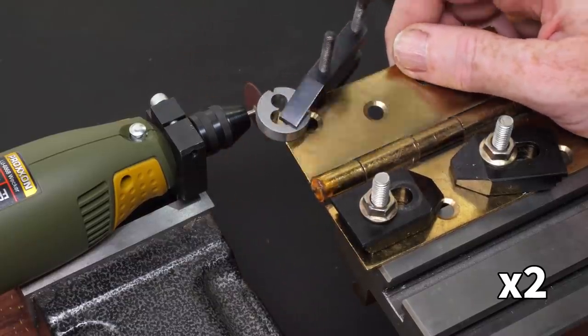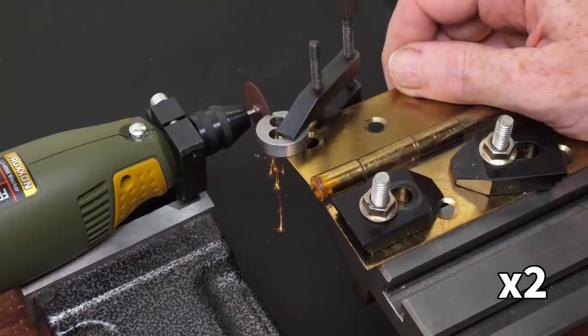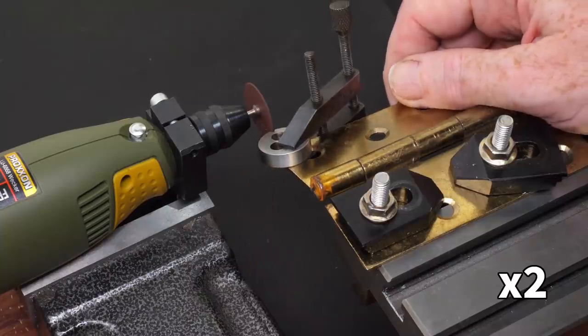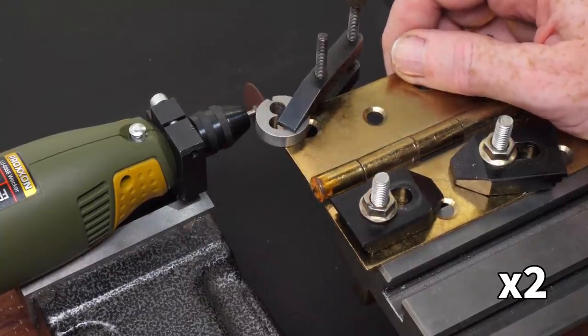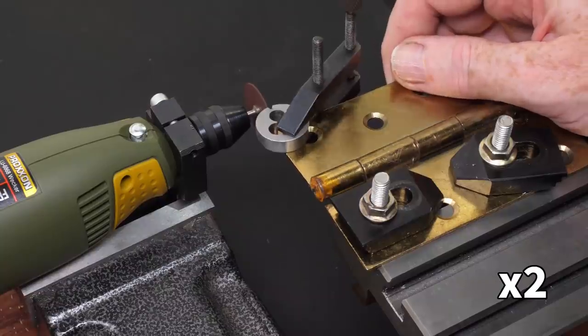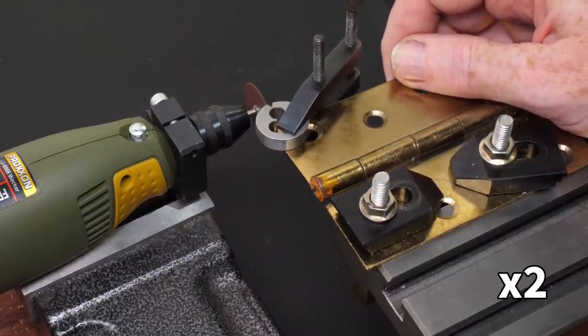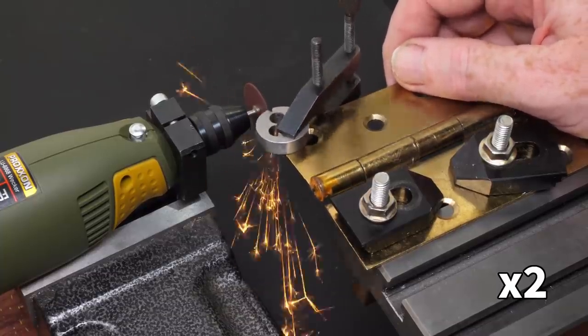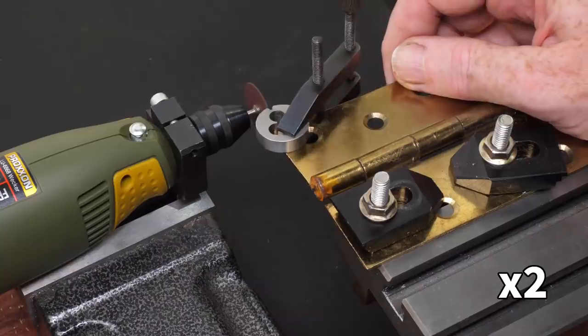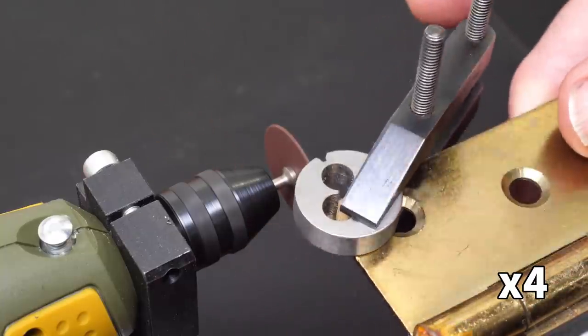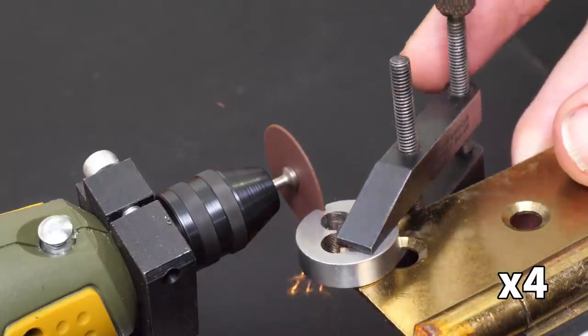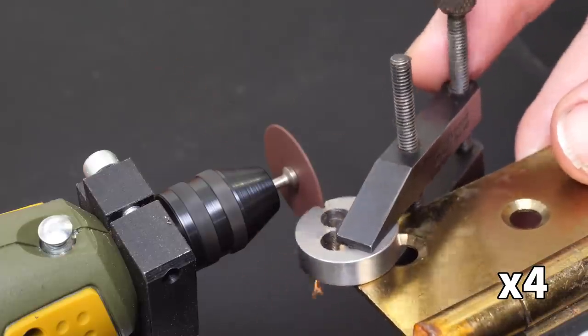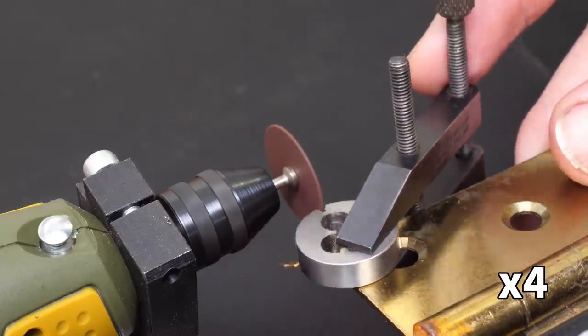Thin cutoff discs are very brittle, so I advanced the feed pretty slowly. There didn't seem to be any problem with the die heating up, probably because I was taking it so slow, and the fixture allowed the heat to conduct away quite easily.